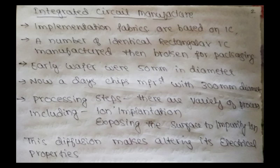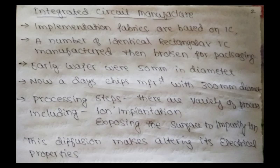Integrated circuit manufacturers implement fabrics on an IC. These fabrics are discussed in the integrated circuit manufacturing process. A number of process steps are carried out. Early wafers were 50 mm; nowadays 300 mm diameter wafers are used. Processing steps are applied for a variety of ICs.